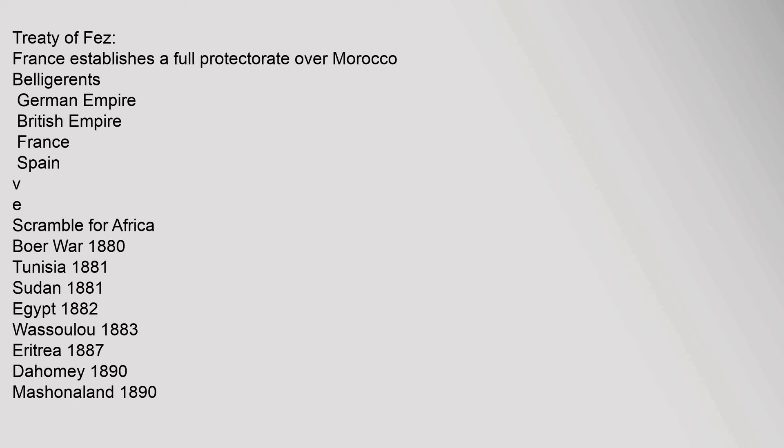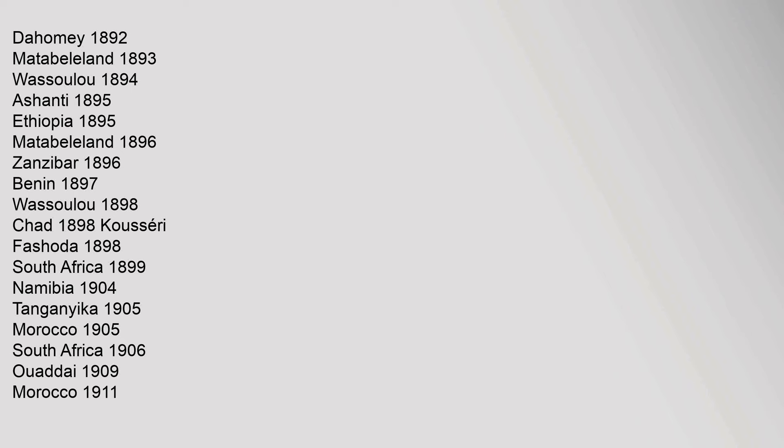Key African colonial conflicts timeline: Dahomey 1892, Matabiland 1893, Wasoulou 1894, Ashanti 1895, Ethiopia 1895, Matabiland 1896, Zanzibar 1896, Benin 1897, Wasoulou 1898, Chad 1898, Fashoda 1898, South Africa 1899, Namibia 1904, Tanganyika 1905, Morocco 1905, South Africa 1906, Wadai 1909, Morocco 1911.